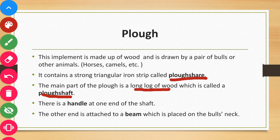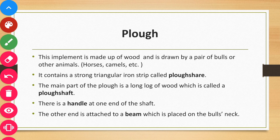The third part is the handle, which is at one end of the shaft for the human to use the Plow. The fourth part is the beam — the other end of the shaft is attached to a beam, which is placed on the bull's neck. So the four important parts of the Plow are: Plow share, Plow shaft, handle, and beam.